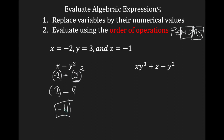Let's try it again. I have x times y to the third power plus z minus y squared. I'm going to replace my variables by their numerical values. x has a value of negative 2. y has a value of 3, which is being raised to the third power. I'm going to add z, which has a value of negative 1. And then I'm going to subtract y raised to the second power, and y has a value of 3.